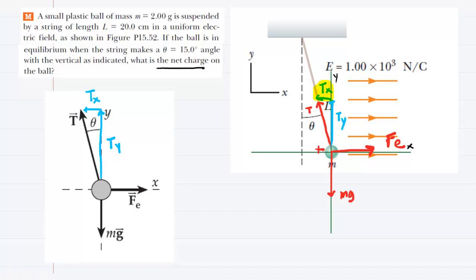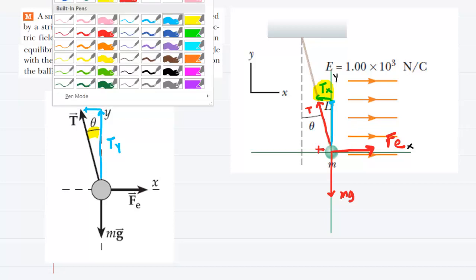So we've redrawn it over here. And this time, we've marked the angle theta between the tension force and the y axis. It is important to understand how we know that that angle is indeed theta. We can actually come back to the diagram that we had drawn previously.